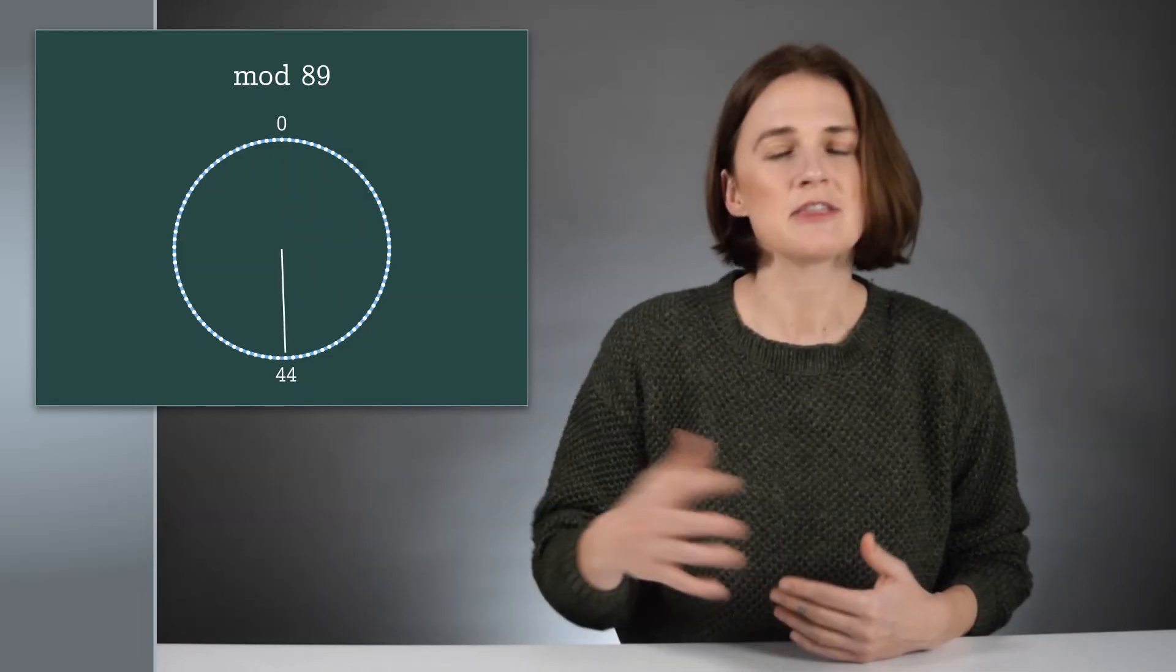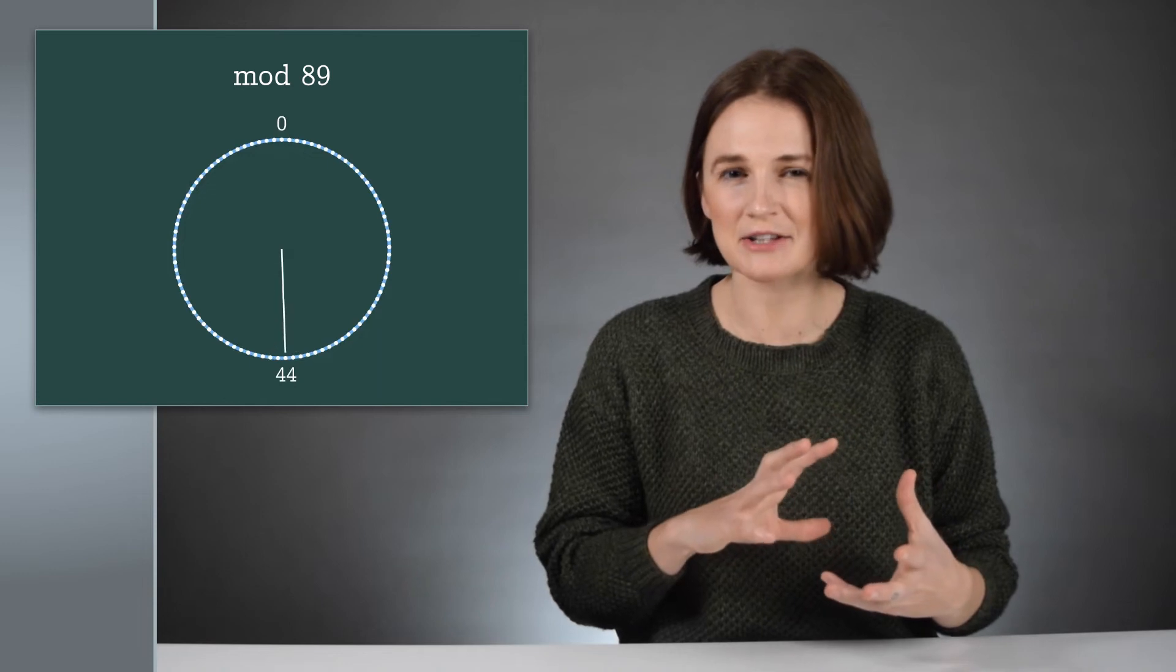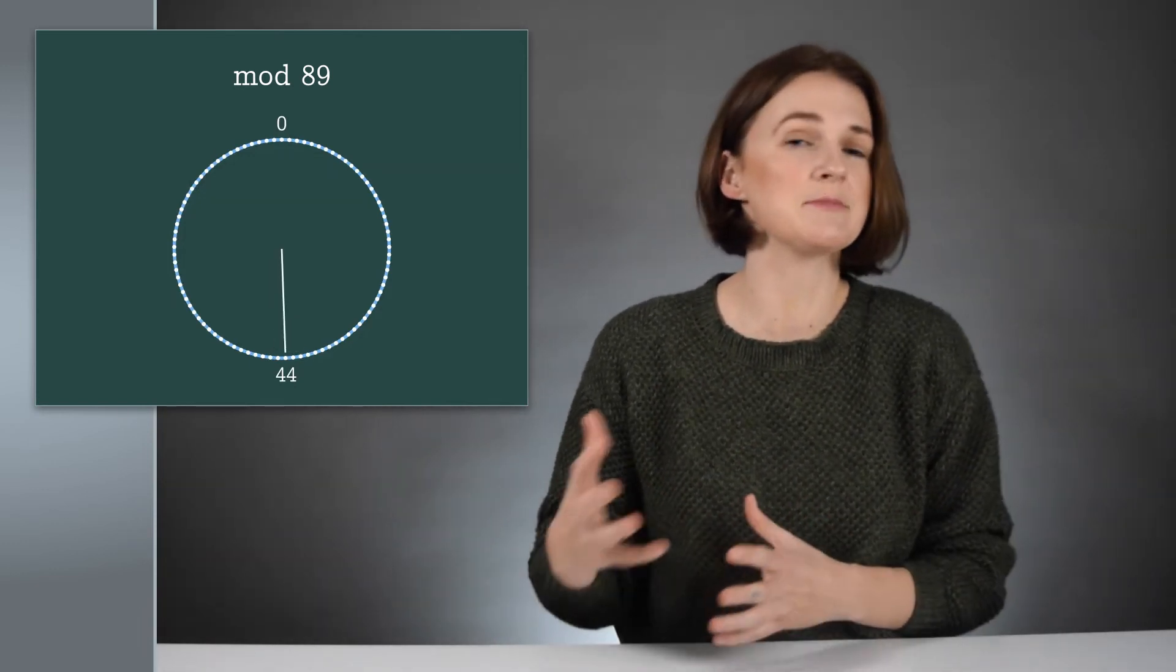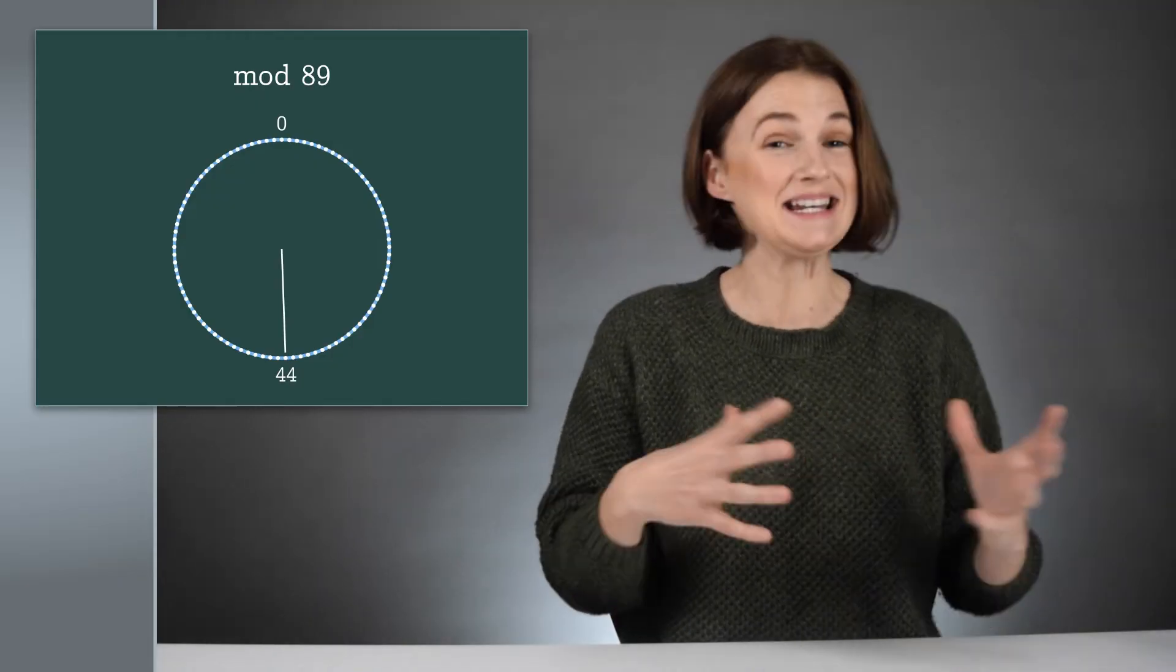In modular arithmetic mod 89, 44 is the furthest number from zero. The error shifts the dial a little bit, but Alice should still be able to tell the difference between something encoded near zero and near 44.